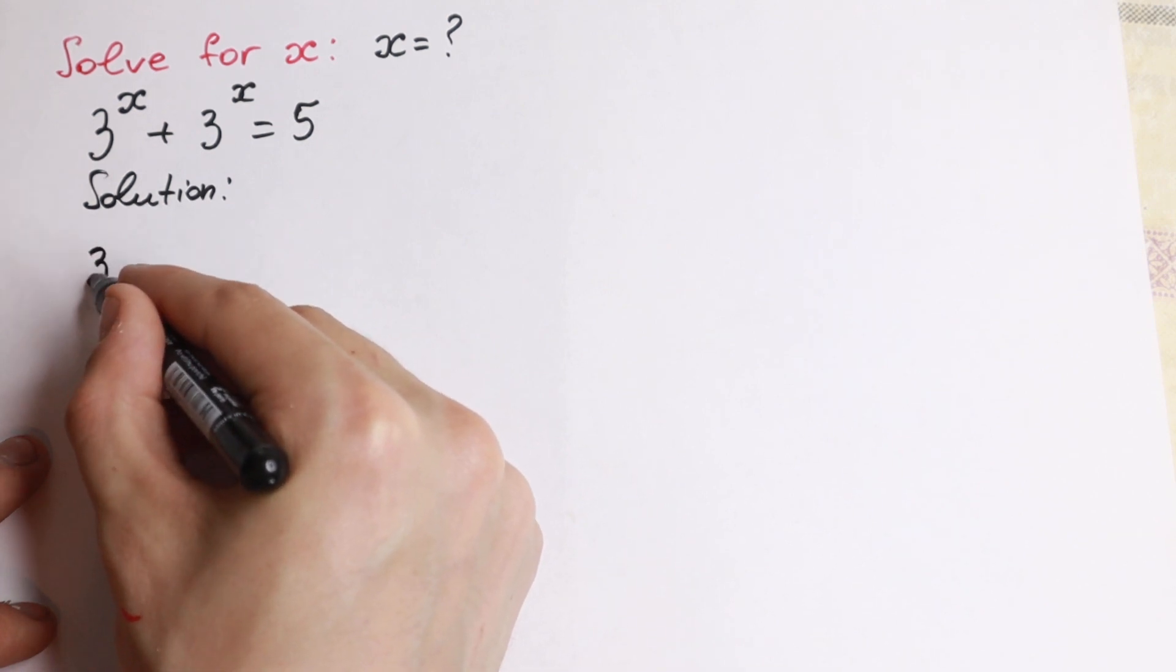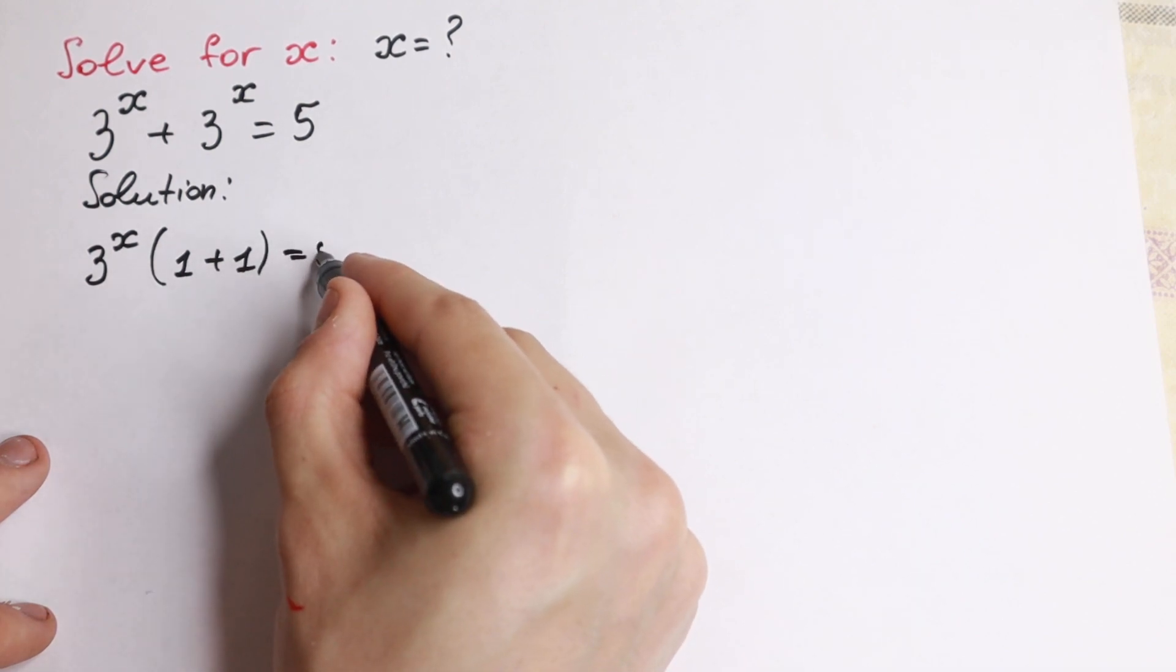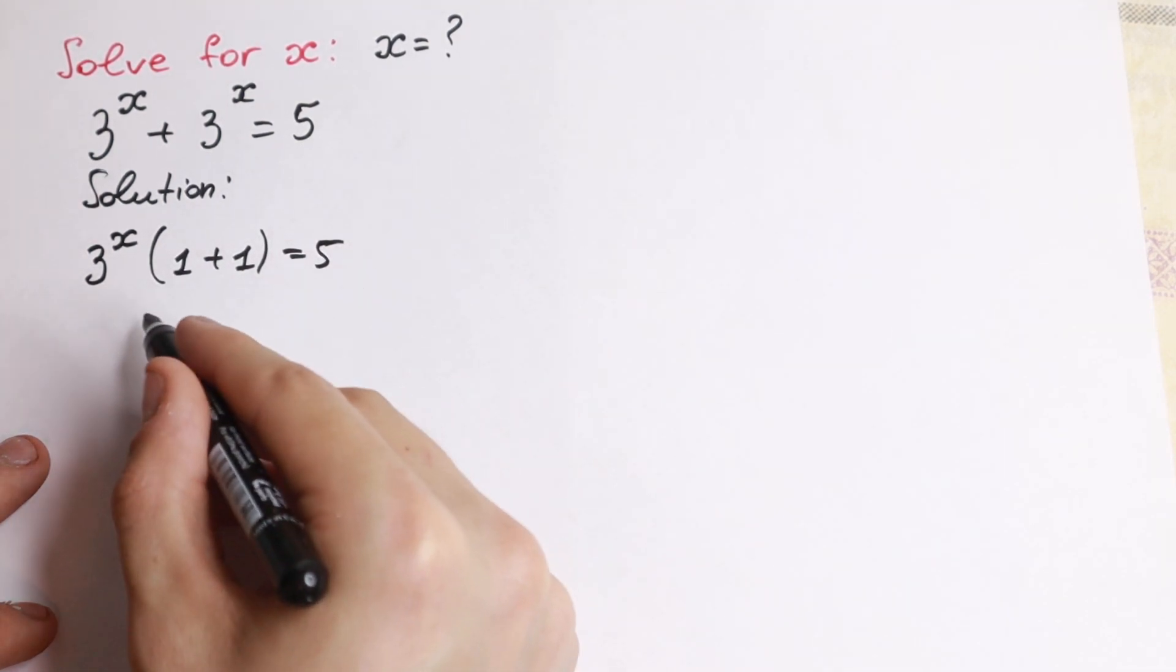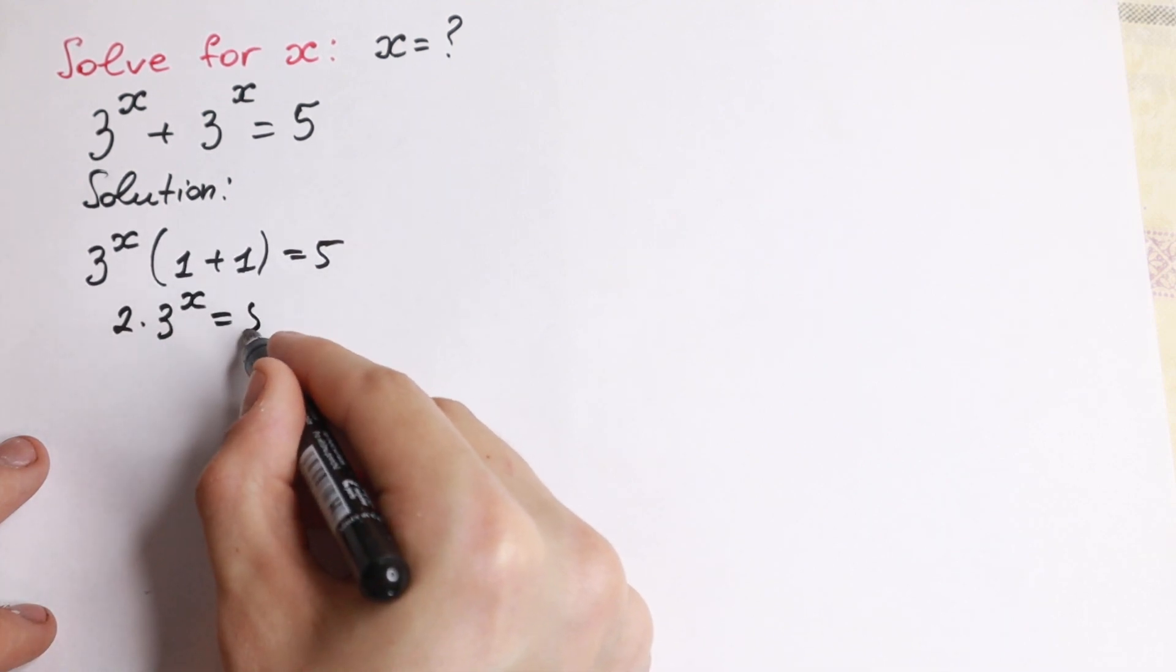So we will have 3 to the x, and if you factor it we'll have 1 plus 1 equal to 5, or we can easily write it as 2 times 3 to the power x equal to 5.